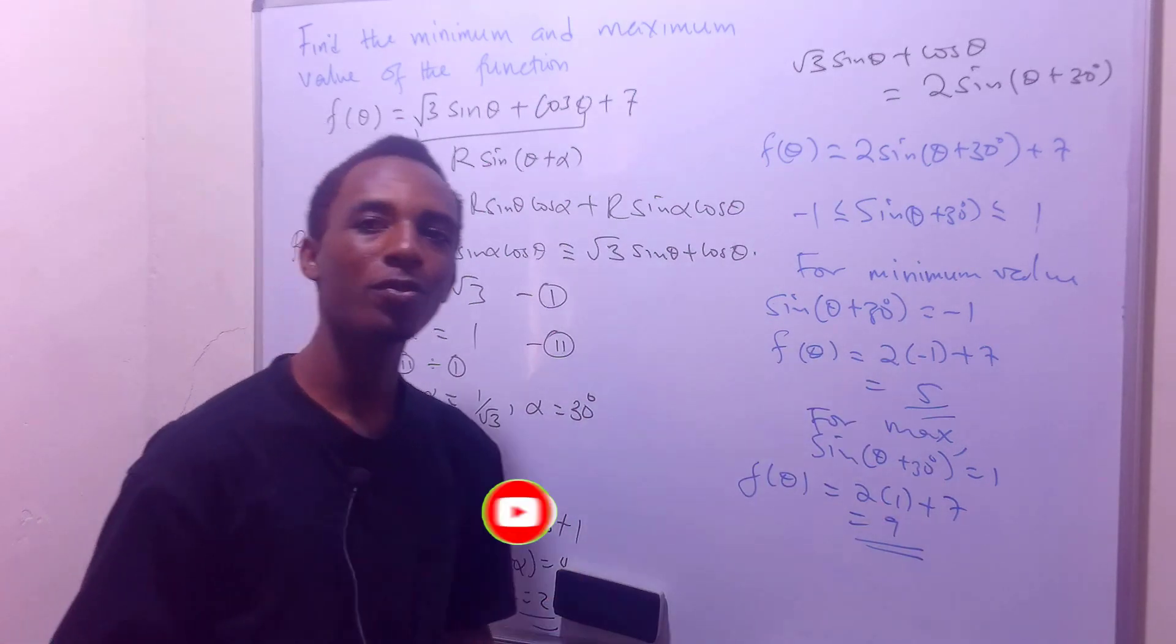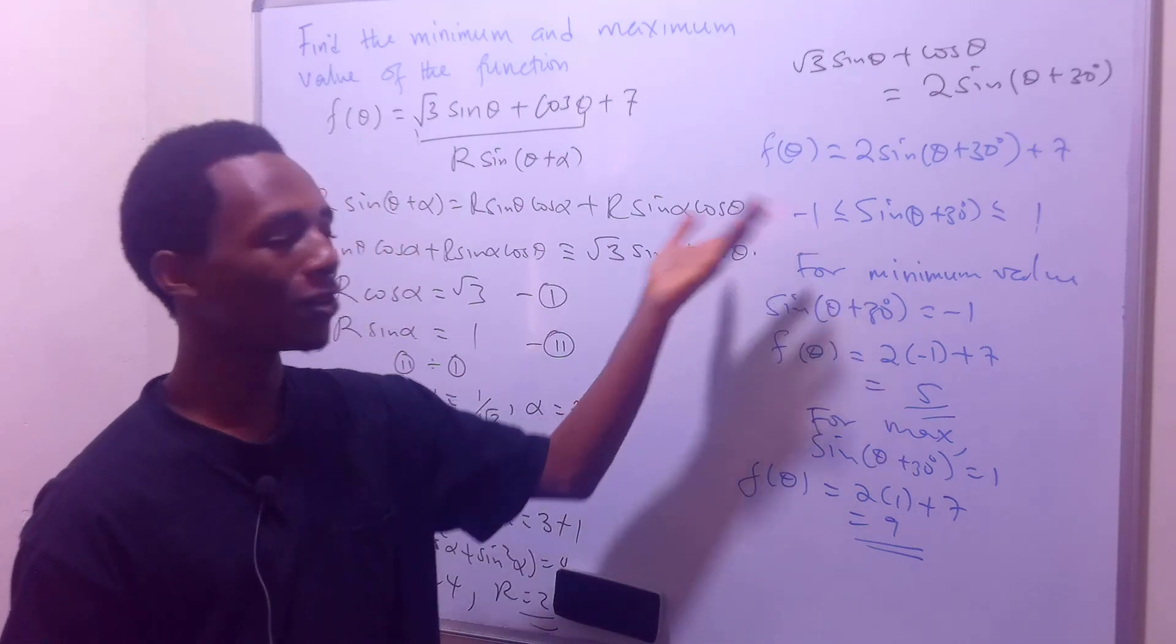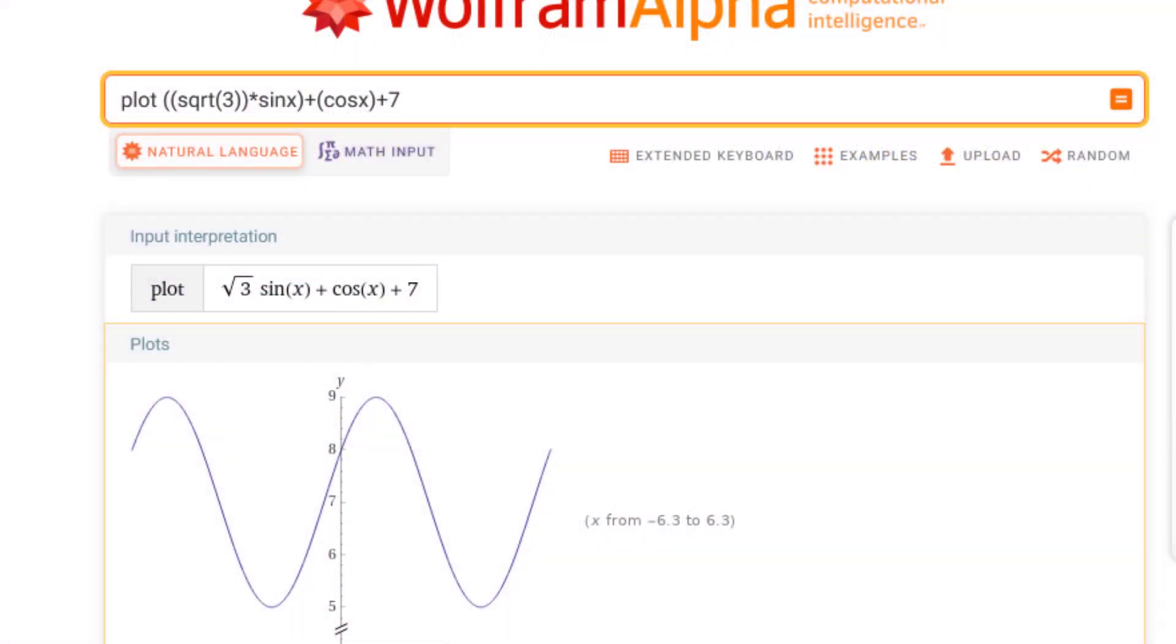So you can actually prove this if you plot this using some graphing software like Wolfram Alpha. You'll see that the maximum for this function is 9 and the minimum is 5.